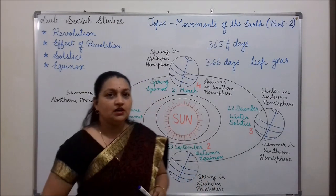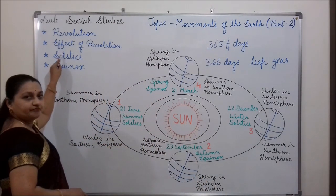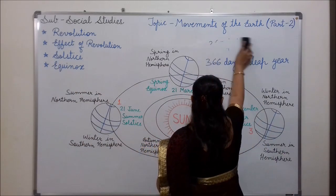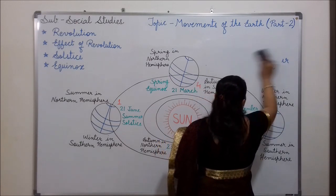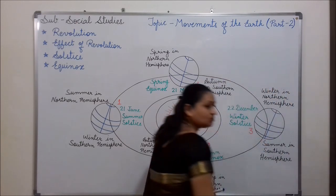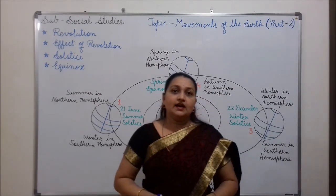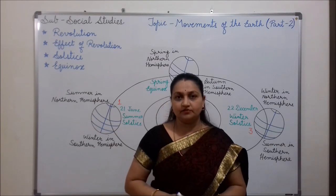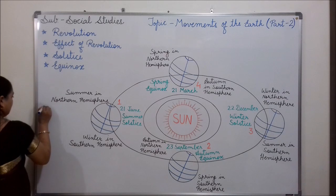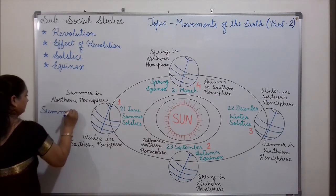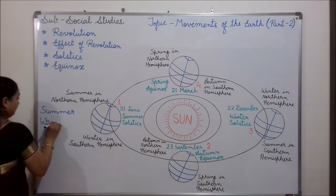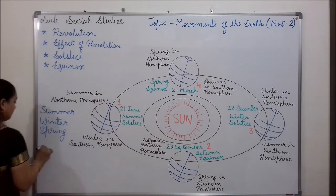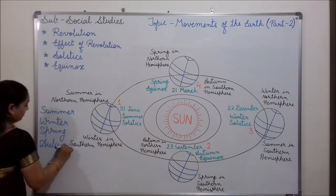Now, come to the effect of revolution. The earth revolves around the sun, and due to the revolution of the earth, seasons occur. There are four main seasons experienced on the earth. They are summer, winter, spring and autumn.